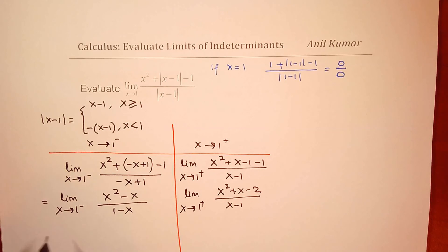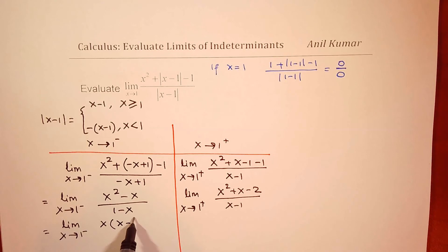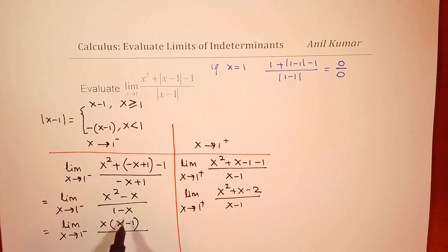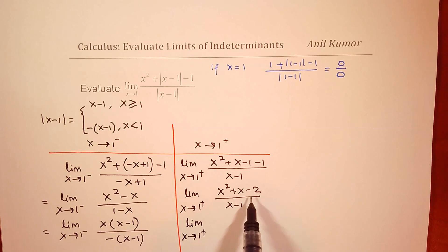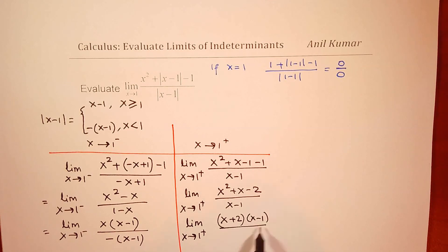Factoring the left-hand expression: x is a common factor in the numerator giving x(x minus 1), and the denominator is (1 minus x), which we can write as negative (x minus 1). Since we have (x minus 1) in the numerator and negative (x minus 1) in the denominator, these cancel. For the right-hand limit, we factor x squared plus x minus 2 as (x plus 2)(x minus 1), divided by (x minus 1).